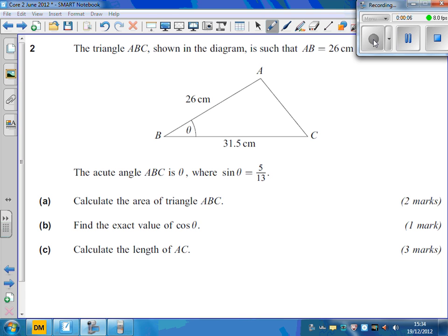And we start off, interesting thing here is we're given what sine theta is. We haven't been given theta equals something like 23 degrees and we've got to do sine 23. We haven't got that. We've actually got that the sine theta is 5 over 13.